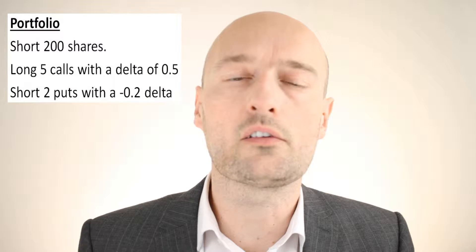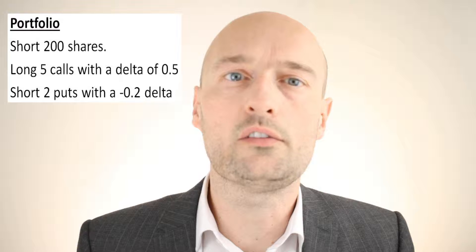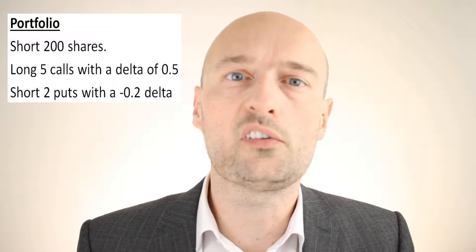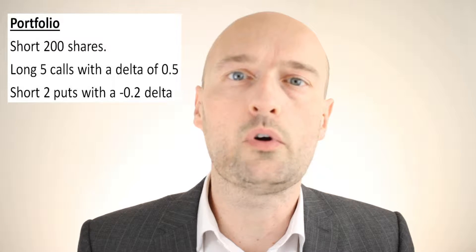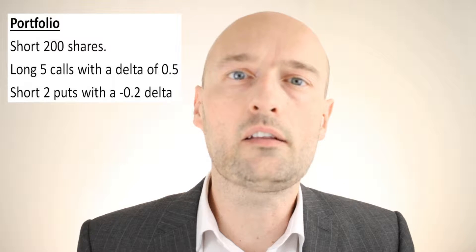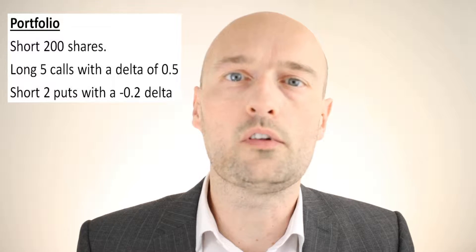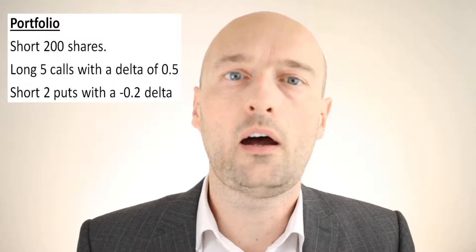The Greeks are additive in a linear manner. This means that the total Delta exposure for all of the options of a given underlying can be found by adding the Delta of each individual option. For example, if you are short 200 shares, long five calls with a Delta of 0.5, and short two puts with a minus 0.2 Delta, you have a net Delta equivalent to 90 shares.